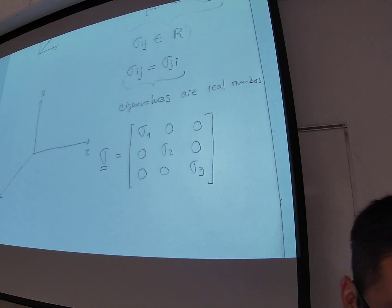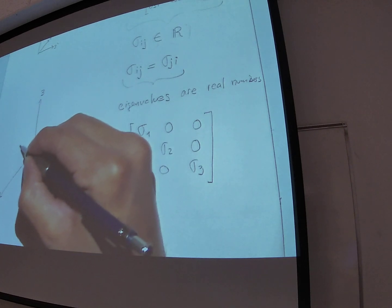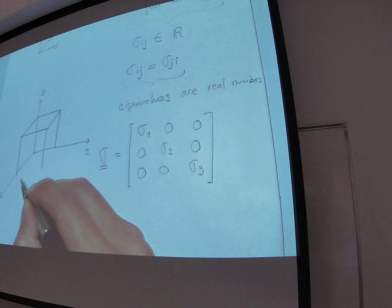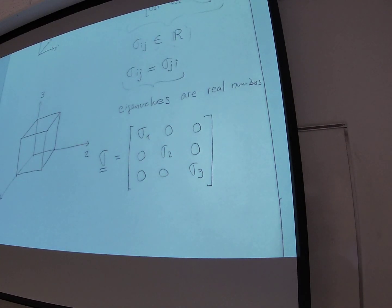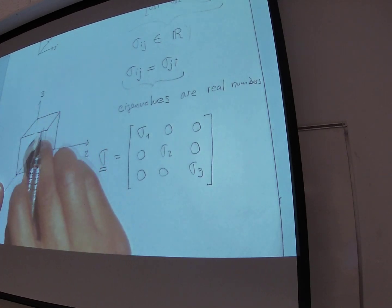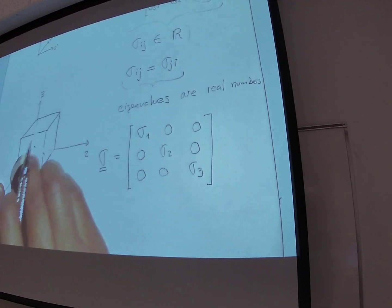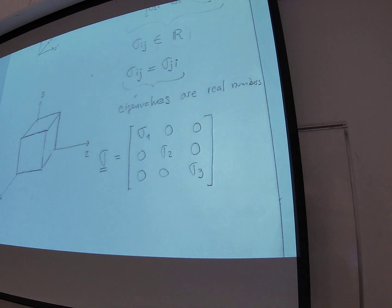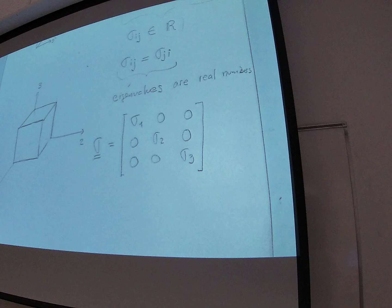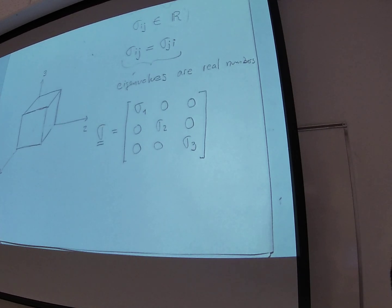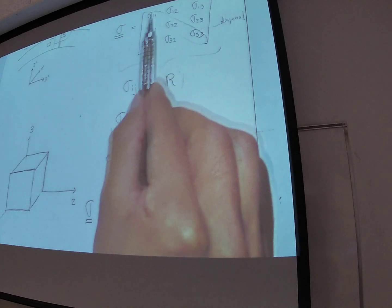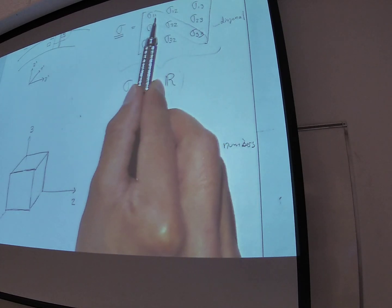In this right-handed coordinate system, we're going to draw a cubic element to visualize what stresses are and what the elements of the stress tensor represent. The solid cubic element is drawn so we can associate each face with a direction. The stress tensor applies to this element, and each component will have a clear physical meaning.